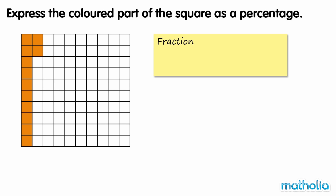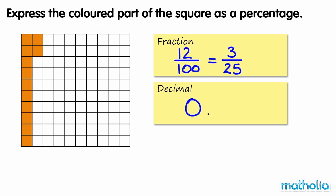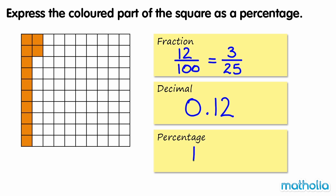Express the coloured part of the square as a percentage. 12 parts are coloured. 12/100ths equals 3/25ths. 12/100ths can also be written as the decimal 0.12. If one part in 100 is 1%, then 12 parts in 100 is 12%.